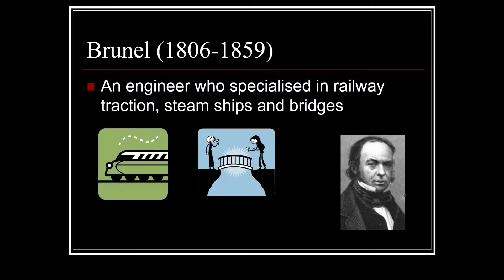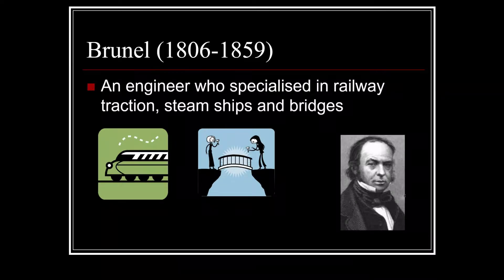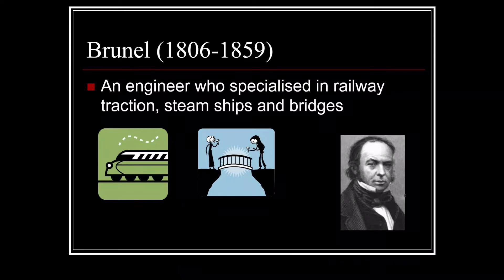Another famous Victorian was Isambard Kingdom Brunel, and he was an engineer who specialized in railway traction. Basically, trains run best on flat ground and aren't very good at climbing hills, so when they would lay track from town to town or city to city, they'd try to choose the flattest route. To achieve this, sometimes they would build massive tunnels, or even a viaduct where the train would cross over a valley or a big dip in the land.